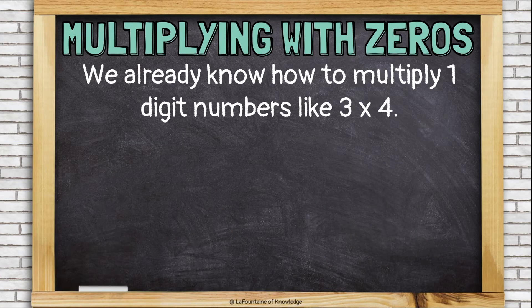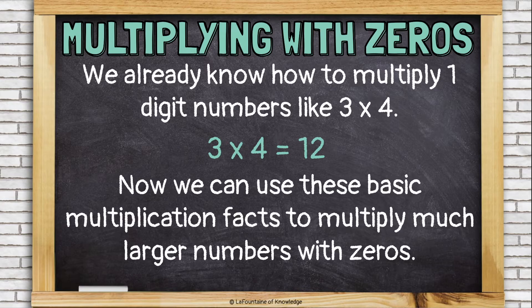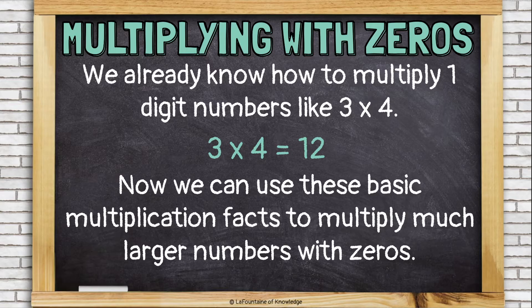We already know how to multiply one-digit numbers like 3 times 4. Now we can use these basic multiplication facts to multiply much larger numbers with zeros.